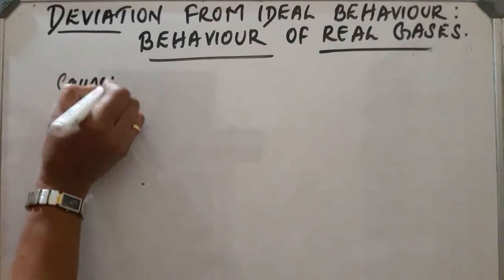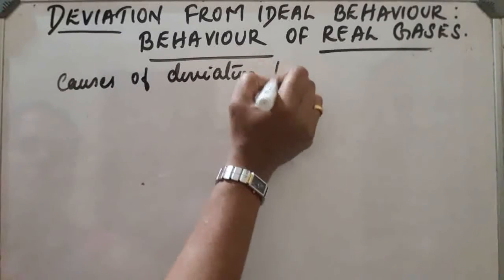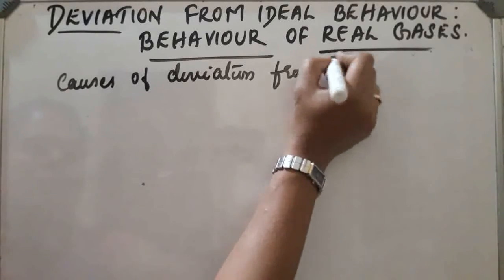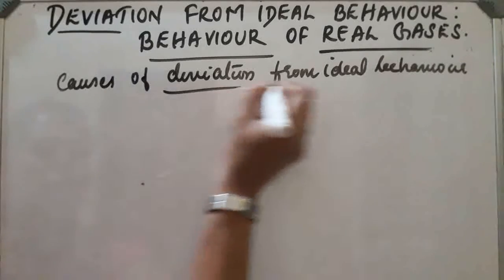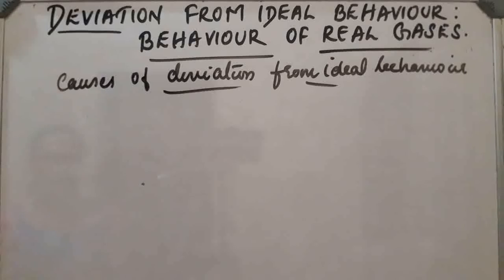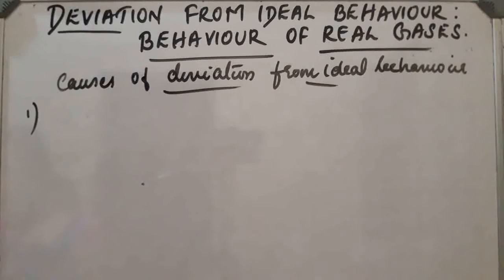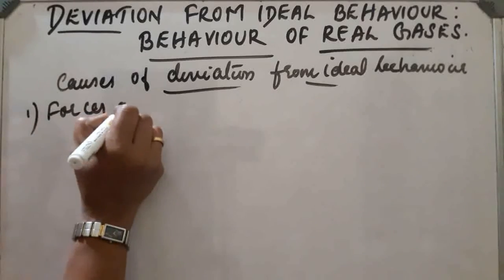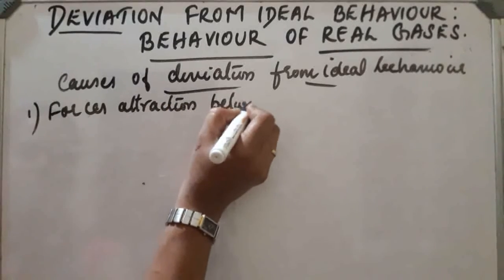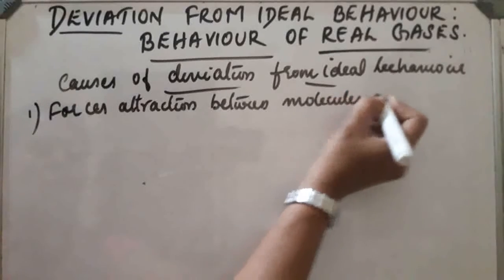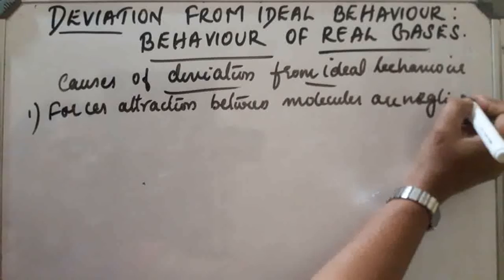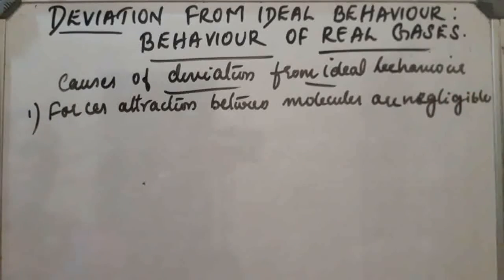Causes of deviation from ideal behavior. The deviation of real gases from ideal behavior may be attributed to two faulty assumptions of the kinetic theory of gases. The first assumption is that forces of attraction between molecules are negligible. According to the kinetic molecular theory of gases, these intermolecular forces are considered negligible. But this is not true, because gases can be condensed.